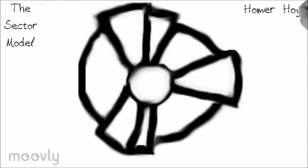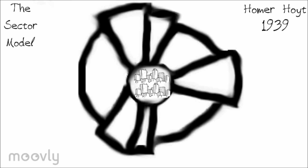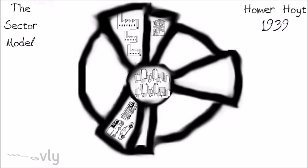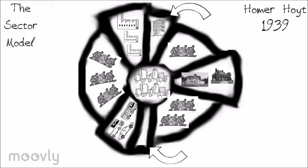The sector model was made in 1939 by Homer Hoyt. It states that a city develops sections surrounding the CBD, and different areas attract different activities by chance or by environmental factors. This model has five sections: the CBD, industry with transportation, low-class residential, middle-class residential, and high-class residential. In the industry section, it is mostly factories and main public transportation routes that go through the CBD. The low-class residential is next to the transportation and industry section and contains low-income housing. They live there to reduce transportation costs and get closer to their work.